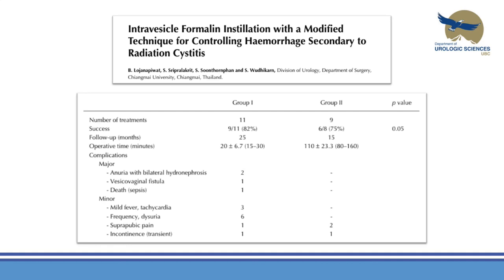One study compared 4% intravesical formalin therapy against 10% formalin applied on focal areas using cotton pledges one by one to avoid diffuse bladder toxicity. Results were somewhat reassuring: 9 out of 11 responded in the 4% group and 6 out of 8 in the 10% pledget group, with significantly fewer complications seen with focal treatment. Due to significant morbidity, formalin instillation should be considered only after failure of less invasive procedures, and when it is used, reflux must be prevented and patients require careful monitoring.